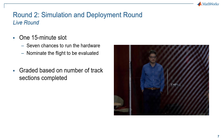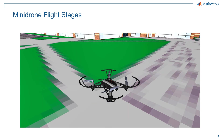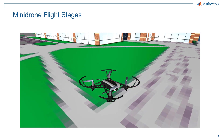The teams will be graded based on the number of track sections they have completed, and the judge will decide which stage the Minidrone flight has completed, as explained in the next illustration. Let's go through the flight stages which would be graded by the judge who will be present on the day of the competition.